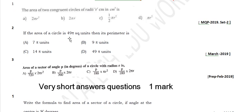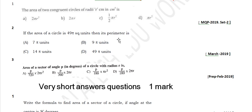If the area of a circle is 49π square units, then its perimeter is: (a) 7π units, (b) 9π units, (c) 14π units, (d) 49π units. From March 2019. If area = πr² = 49π, then r² = 49, so r = 7. The perimeter (circumference) is 2πr. Substituting r = 7, we get 14π units.